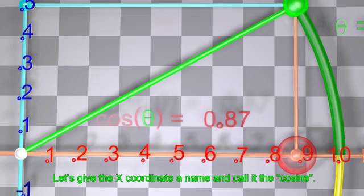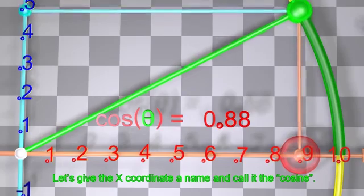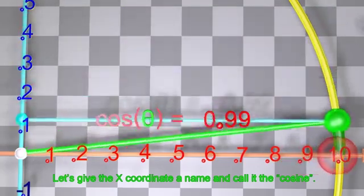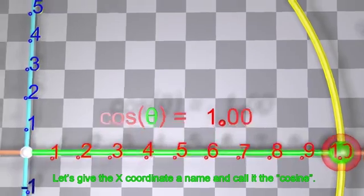Because the circle is on a graph, let's name the x-coordinate cosine. For every value of theta, we will have it as the cosine of theta. Congratulations, you have a function.